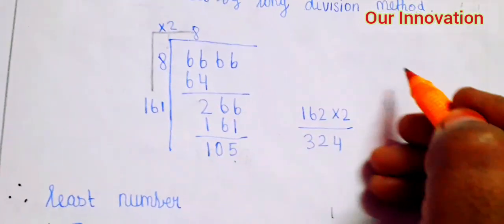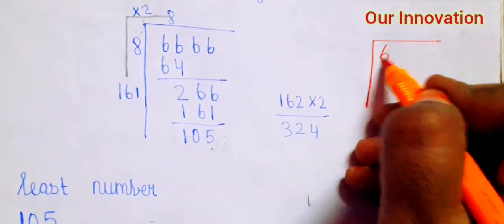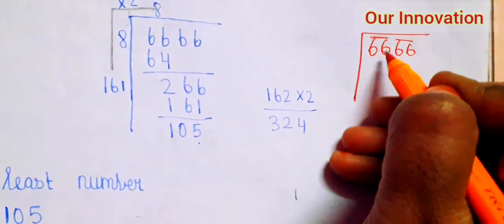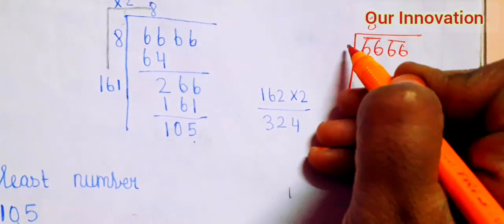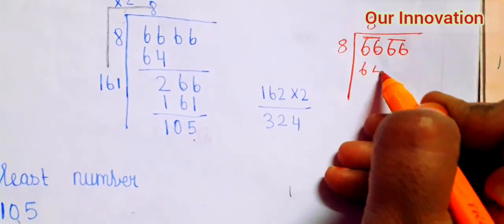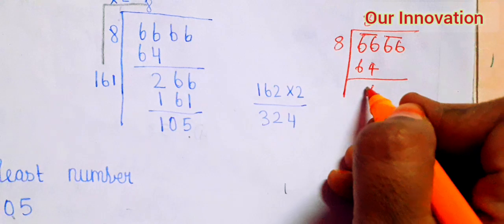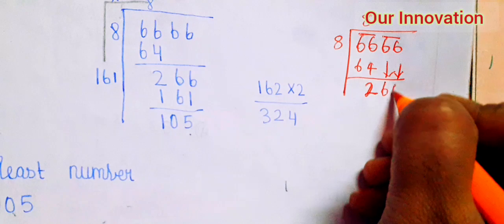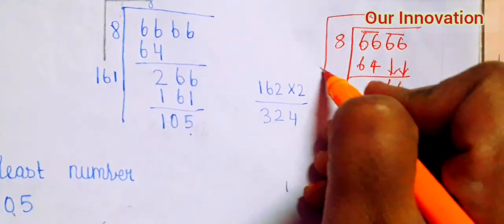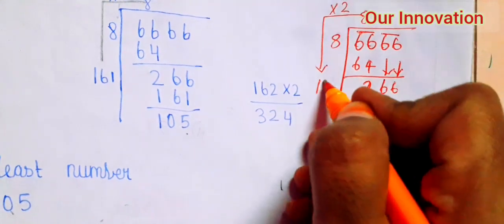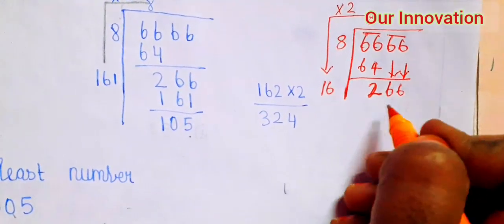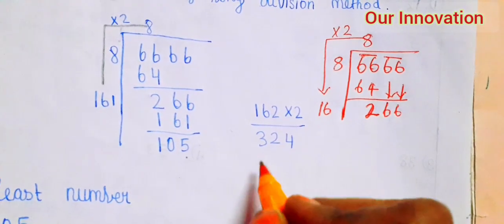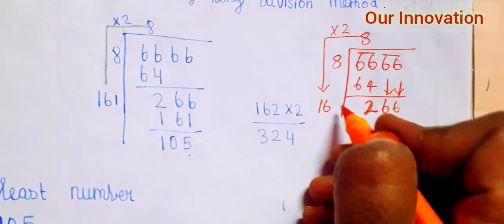Find by long division method. So here we explain: 6666, you can split it. So 66 — 8 squared is 64, so 64. 6 minus 4 is 2. Next 2 numbers: 266. Next step, into 2, so 162 times 16.